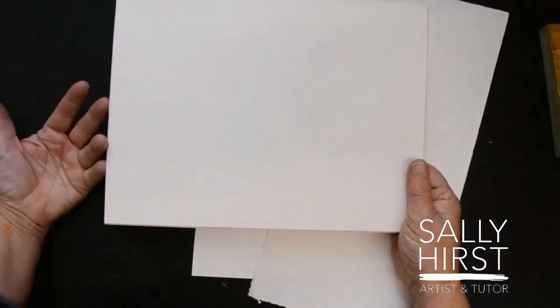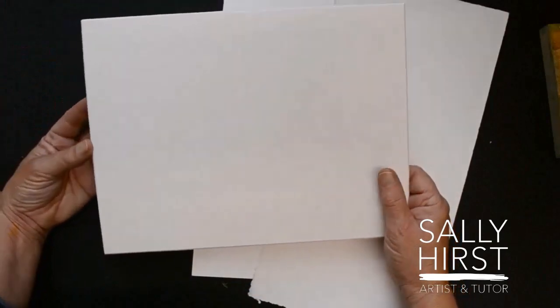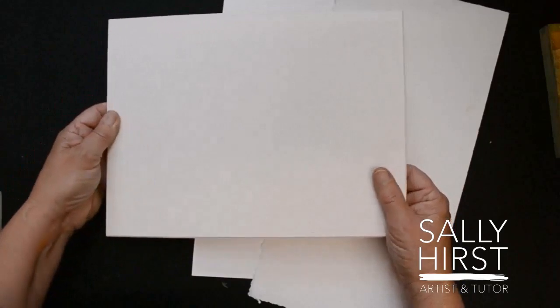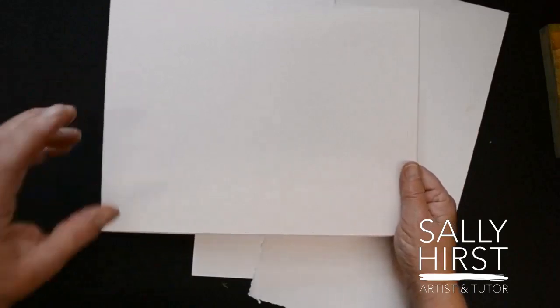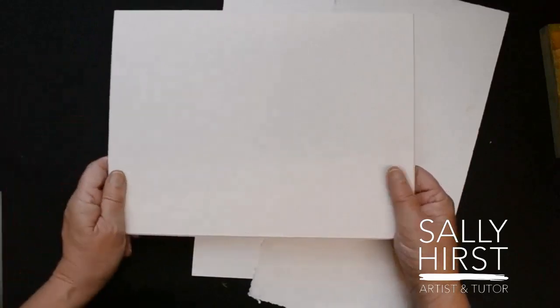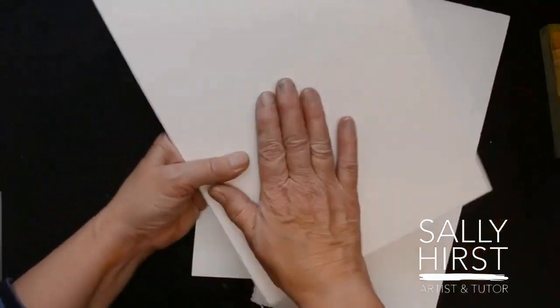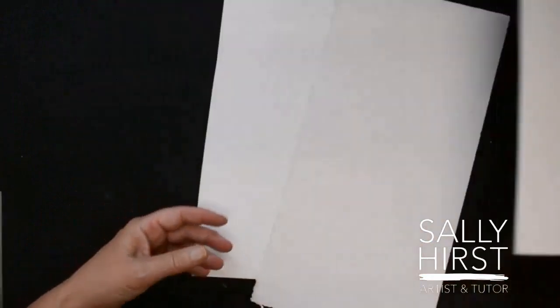You could use matte medium, you could use gloss medium. It'll be a bit shiny, but that would certainly work. But I do quite like working on a gesso. It's designed to be a base layer to accept any kind of paint, oil or acrylic. So mount board, watercolor paper, all perfectly fine.